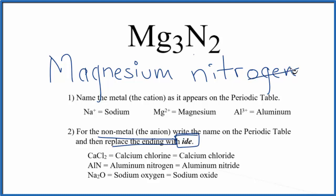So instead of O-G-E-N, we have I-D-E. So the name for Mg3N2 is magnesium nitride.